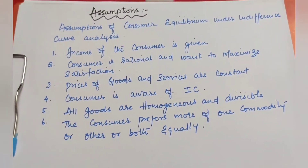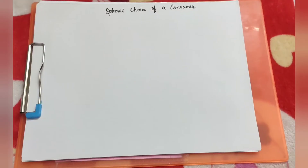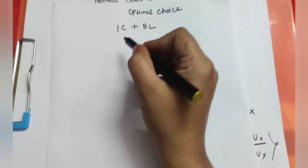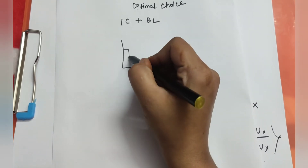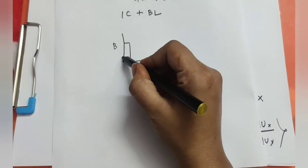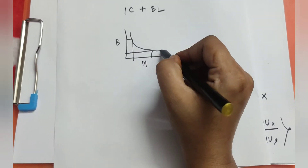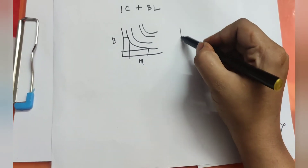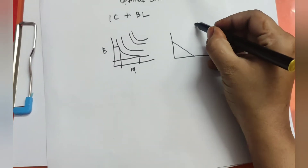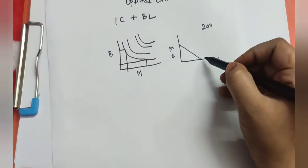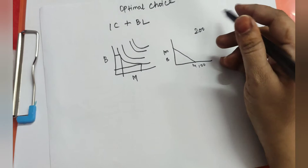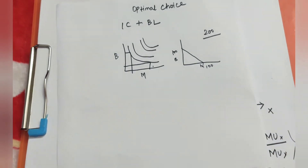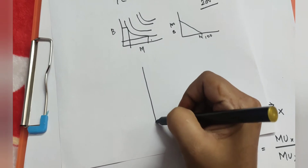The optimal choice is obtained by combining the indifference curve (IC) and the budget line. The IC represents any combination of goods — like bananas and mangoes — that depicts the consumer's satisfaction level; higher IC means higher satisfaction. The budget line is your spending limit — for example, with 200 rupees you can buy 100 bananas and 100 mangoes, or 150 bananas and 50 mangoes. By combining IC and the budget line, we can determine the optimal choice of a consumer.